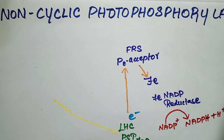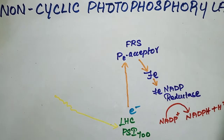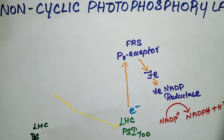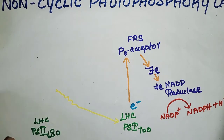This NADPH is formed. Now, here the electron is lost from PS1. Then something whole is created — some empty space is here — so it has to be filled. So here comes our PS2, the light harvesting complex. PS2 has a reaction center wavelength of 680, so the reaction center is P680.